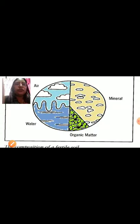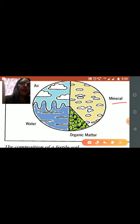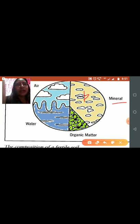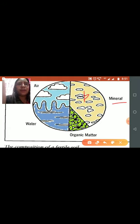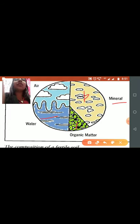Now we will see what factors maintain the fertility of the soil. The first is minerals — minerals like potash, nitrogen, and silica are very necessary for plant growth. These are nutrients for both the soil and the plant. Then organic matter, like humus, which is formed by the decay of plants and animals, also maintains the fertility of the soil.